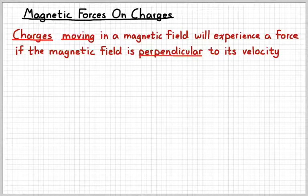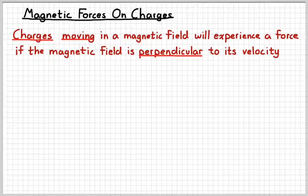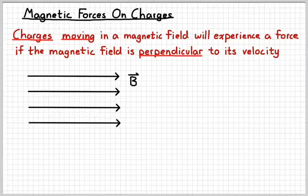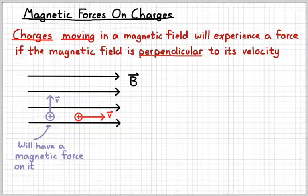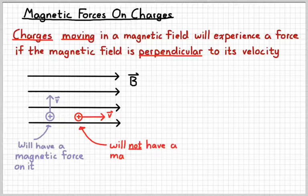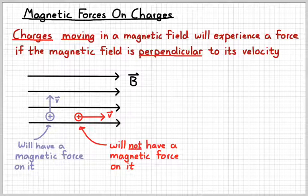And they'll only experience a force when they're moving perpendicular to the magnetic field. So there's a lot of conditions necessary in order for a magnetic field to exert a force. That charge has to be moving, and that charge has to be moving perpendicular to the magnetic field. So if we draw a magnetic field going to the right, and then we draw a couple of charges — if the charge on the left is moving upwards and the charge on the right is moving to the right, only the charge on the left is going to have a magnetic force on it, because it's moving perpendicular to the magnetic field. The charge on the right will not have a magnetic force on it. Moving parallel to a magnetic field doesn't affect the charge at all.